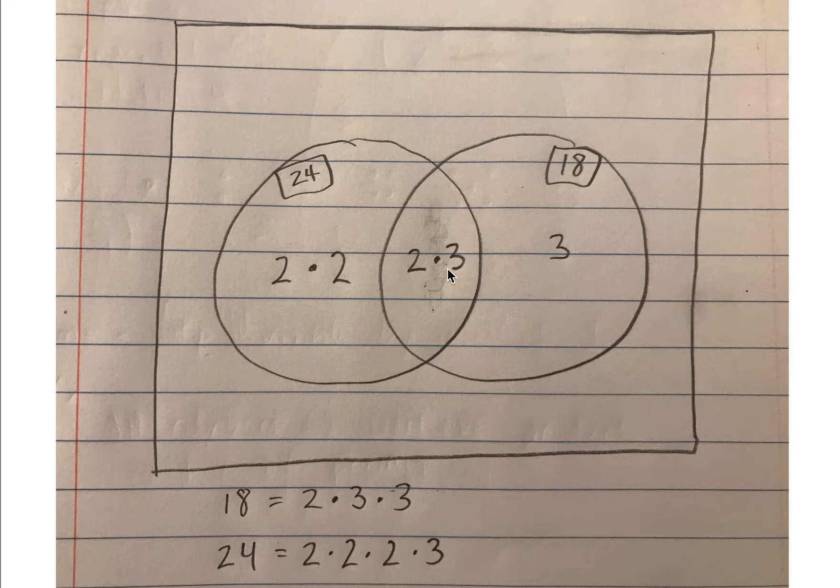24 has a 2 and a 3 and a 4, no 5, has a 6, no 7, has an 8, no 9, no 10, no 11, and finally a 12 and then we're going to be up to 24.